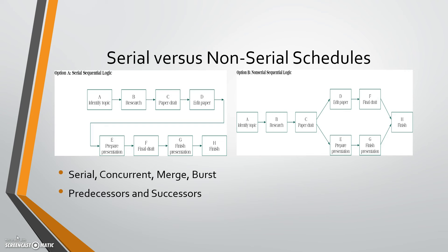A predecessor is something that happens first — or must be completed first — where a successor is something that happens after. In the left picture here, you must draft the paper before you can edit the paper. So C is a predecessor to D. Likewise, D must happen after C, so it's a successor. Predecessor means things that come before, and successor means things that have to follow.